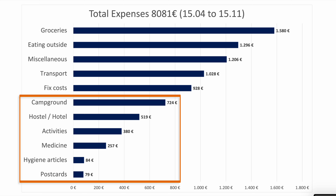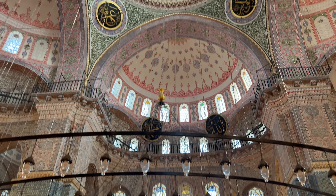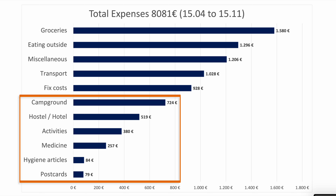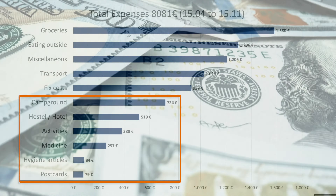Further down the expense list, the individual categories have less and less impact on overall spending. For activities, maybe I'd actually spend more in the future — a museum in Vietnam costs one to two euros, but in Istanbul I restricted myself since some things were 15–20 euros and hard to justify. I went to free attractions instead. On a two-week vacation I wouldn't think twice, but long-term travel requires different thinking.